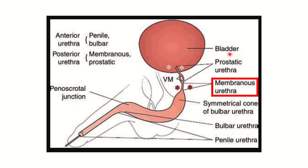We can see the bladder, then prostatic urethra, membranous urethra, bulbar urethra, and finally penile urethra. The urethra can be divided into two parts: the anterior urethra, which consists of the penile and bulbar urethra, and the posterior urethra, which consists of the membranous and prostatic urethra.